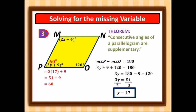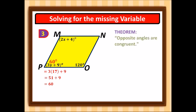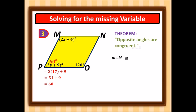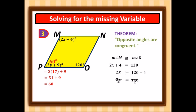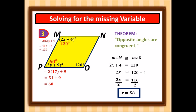Now solving for x: opposite angles are congruent, so angle M equals angle O. With angle M equal to 2x plus 4 and angle O equal to 120, we get 2x equals 116, so x equals 58. Checking: 2 times 58 plus 4 equals 120, which matches its opposite angle.